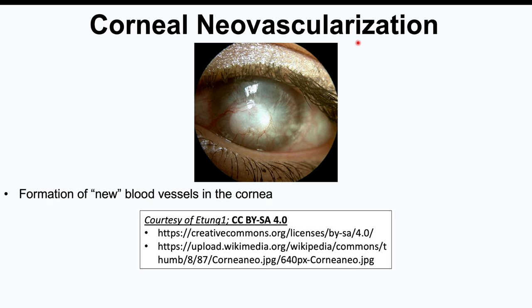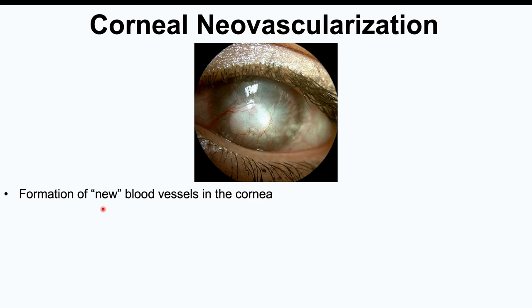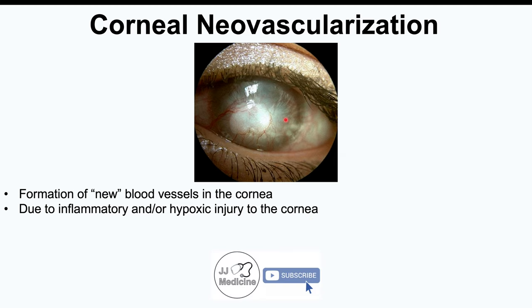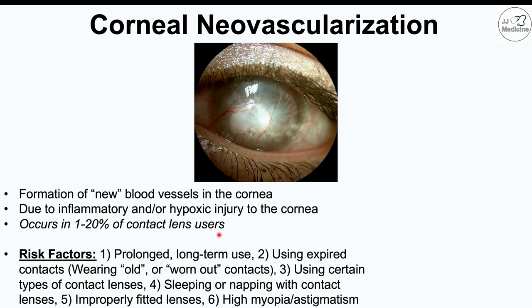The next condition is corneal neovascularization — the formation of new blood vessels in the cornea. This occurs due to inflammatory and/or hypoxic injury to the cornea; the cornea increases blood vessel formation to compensate for insufficient oxygen. It can occur in 1 to 20% of contact lens users. Risk factors include prolonged long-term contact lens use, using expired or worn-out contact lenses — as their oxygen permeability becomes impaired — and using certain types of contact lenses.